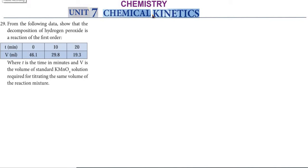Hi students, greetings from Success Education Academy. Chemistry Unit 7, Chemical Kinetics, book back edition problem 29. To prove the first-order reaction, we look at the decomposition of hydrogen peroxide. The data given includes time and volume of KMnO₄ solution, which is a titration method.